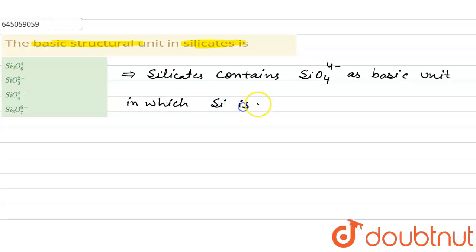silicon is bonded to four oxygen atoms through covalent bonds.